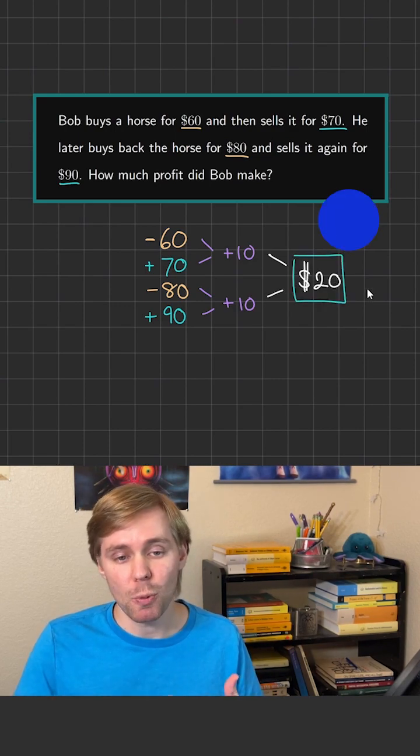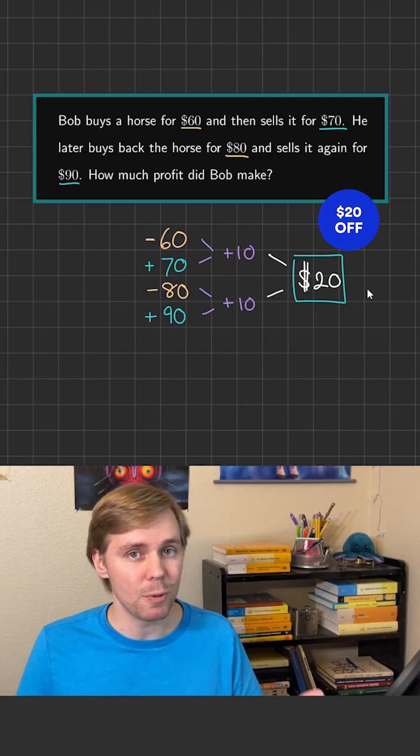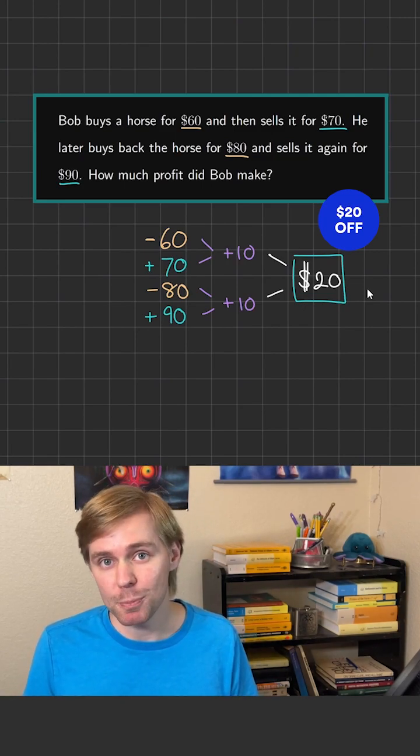So this means Bob's bank account was $20 higher at the end of all of this than it was at the beginning. He made $20 in profit.